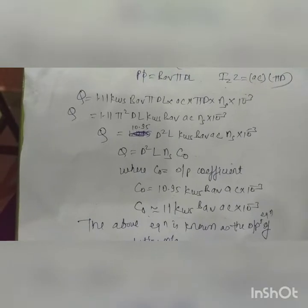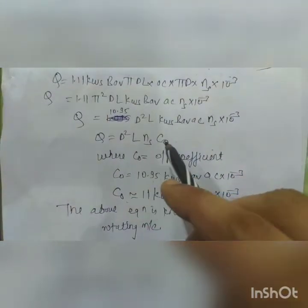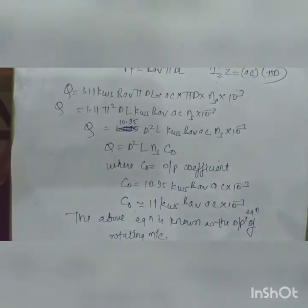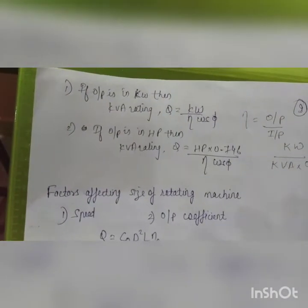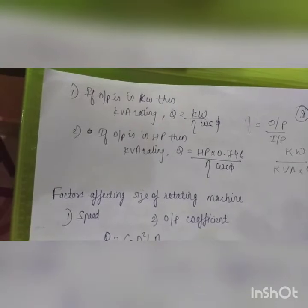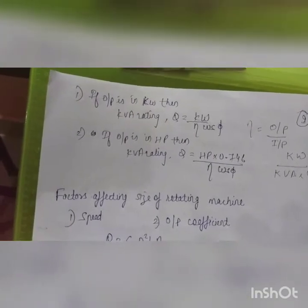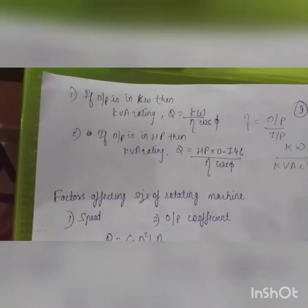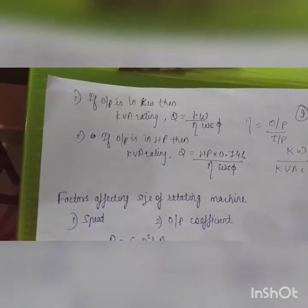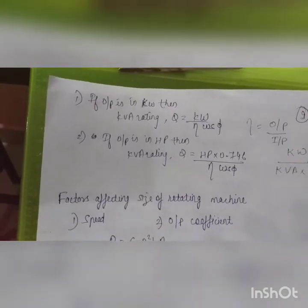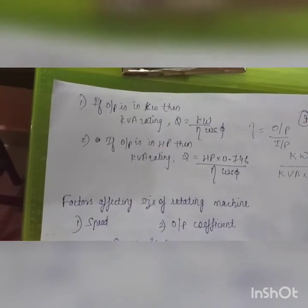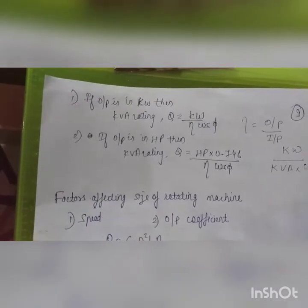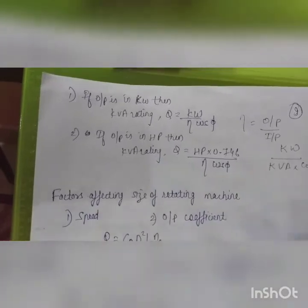Q = D²L · Ns · C0 is the main equation on which the size of the rotating machine depends. When asked to find the KVA rating and the problem gives output in kilowatts, note that the KVA rating is constant for both the input port and the output port. Any machine can be modeled as a two-port network with an input port and an output port.